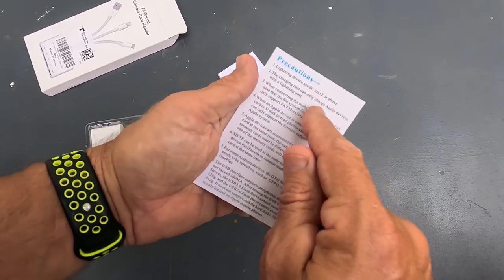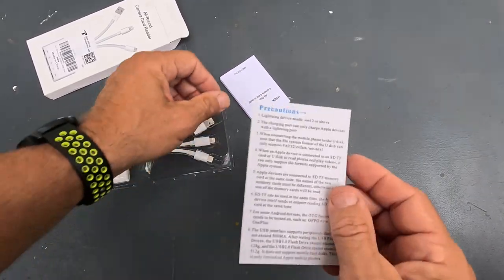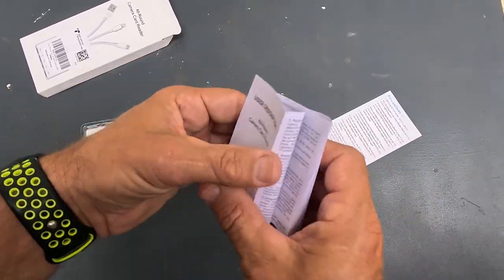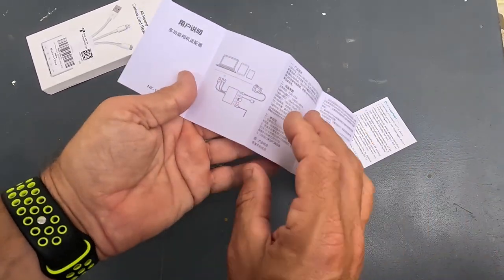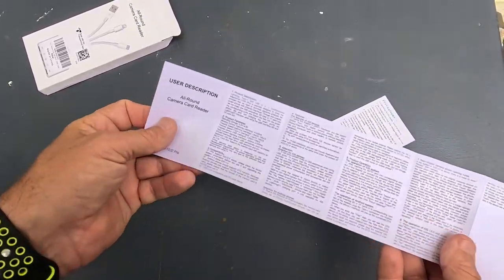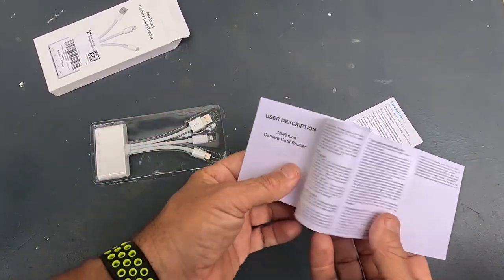It gives you a breakdown on how to use it on iOS 12 and Android. There's a little user manual—the back is in Chinese, front is in English. Basically it breaks down how to use it, but you know what, it's a card reader, there's not much to it.